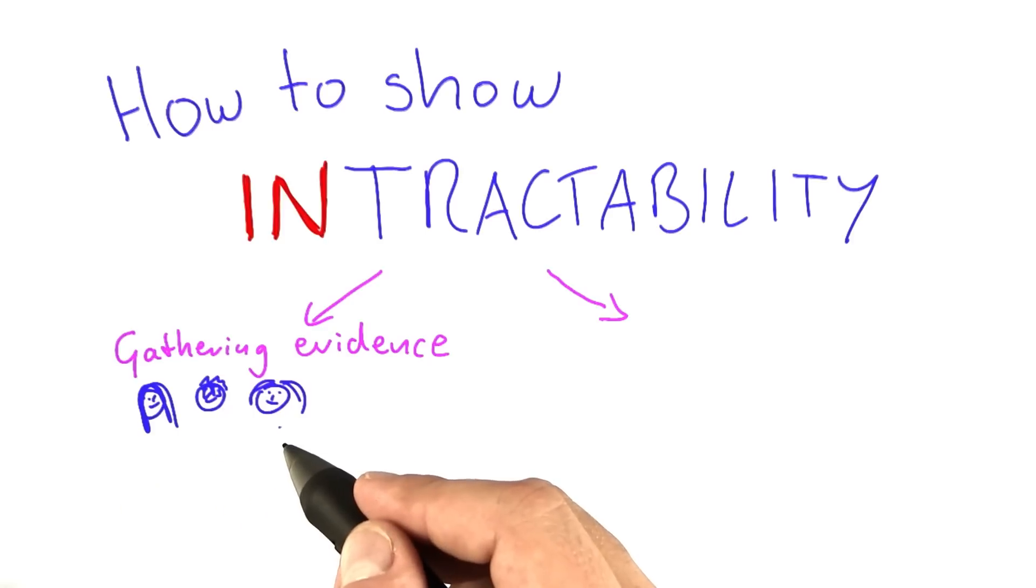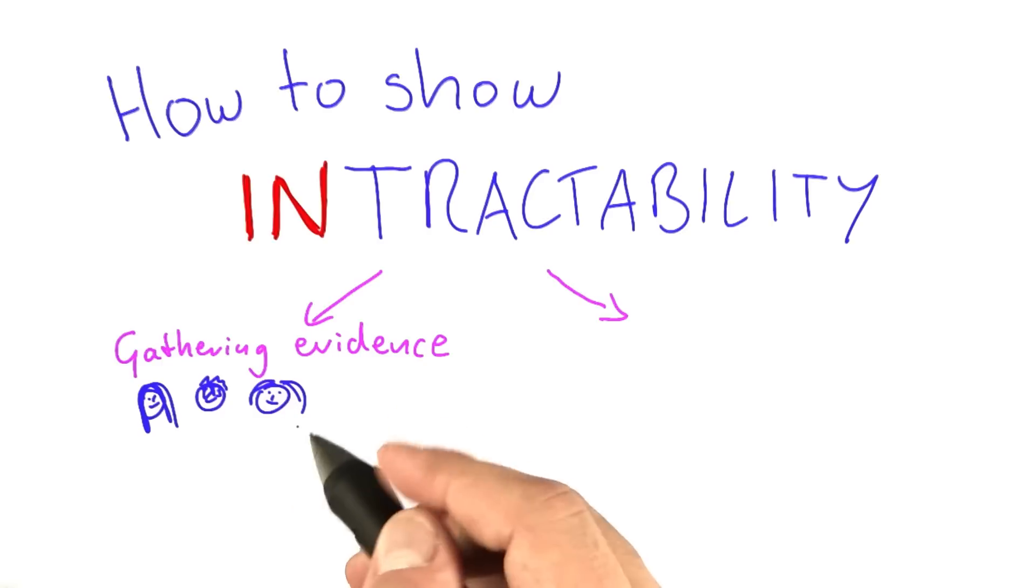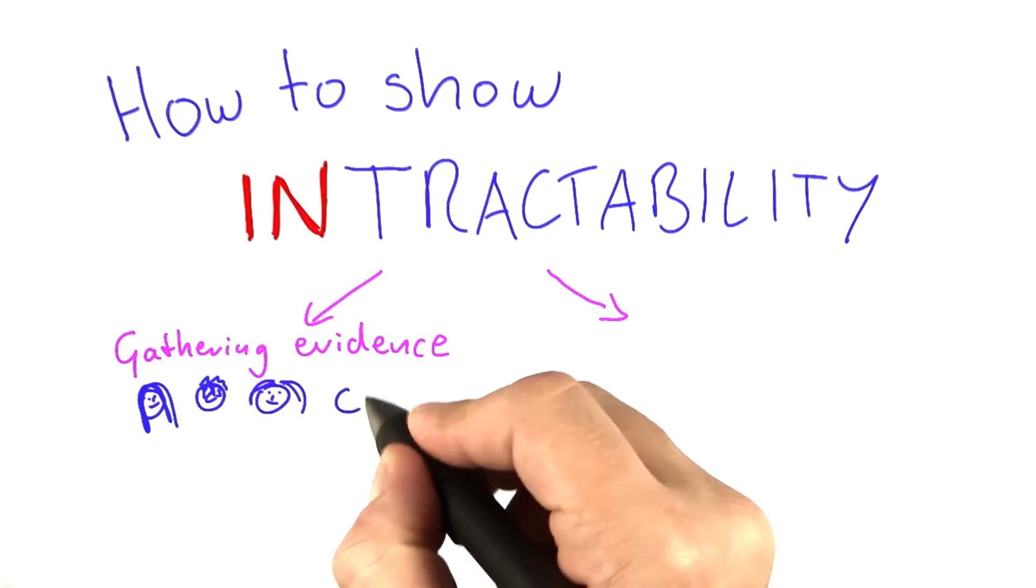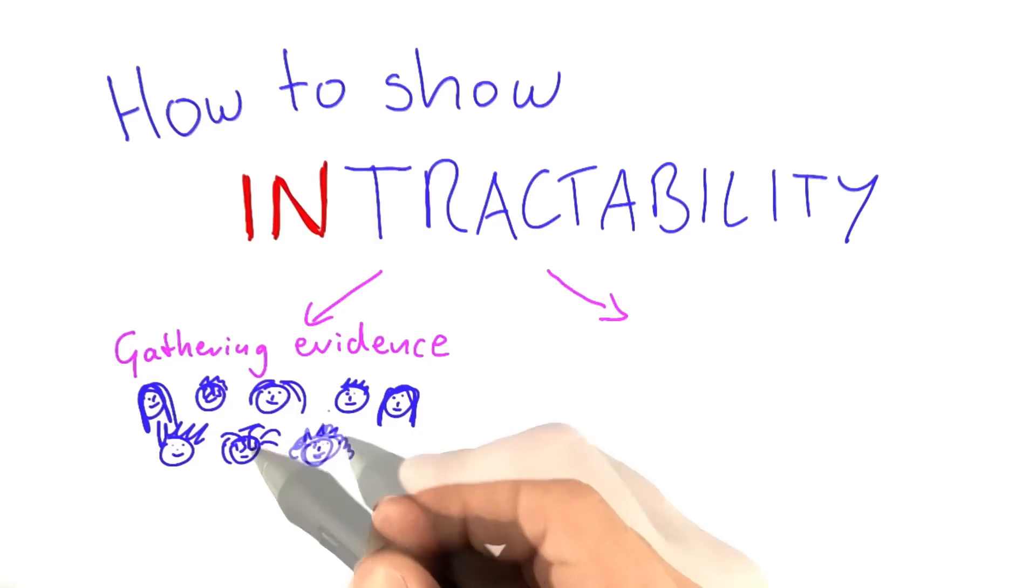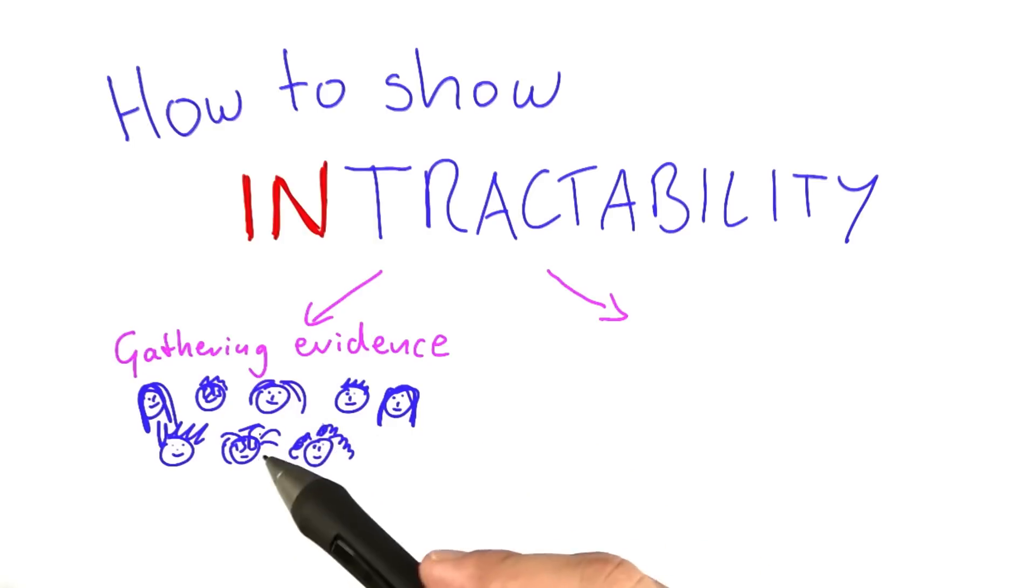So one way we could be gathering evidence is if we just find more people working on more hard problems. Of course, all of them are very smart people. If we could find more and more people who are also very smart working on very tough problems, but also no one of them finds a polynomial time algorithm.